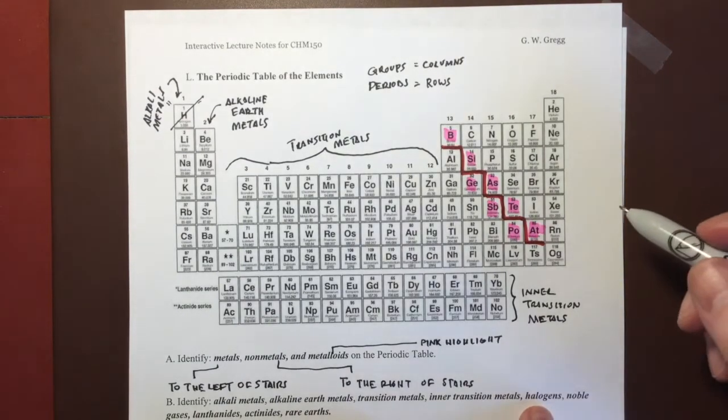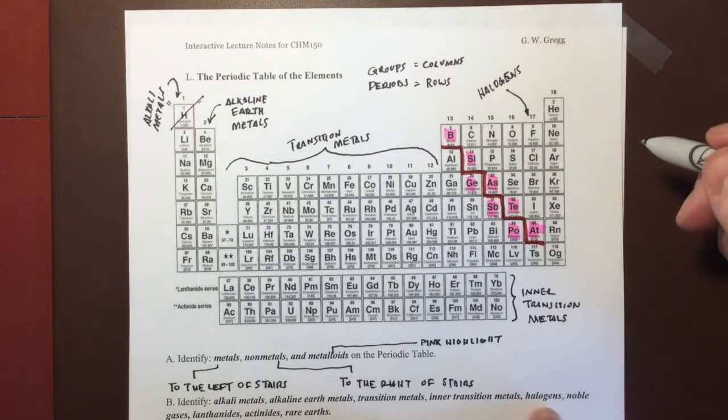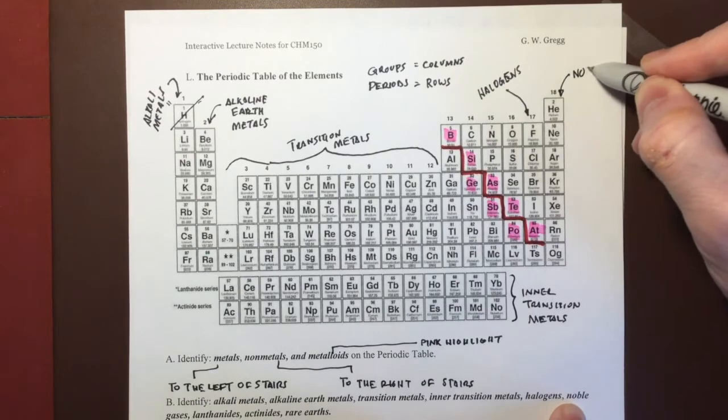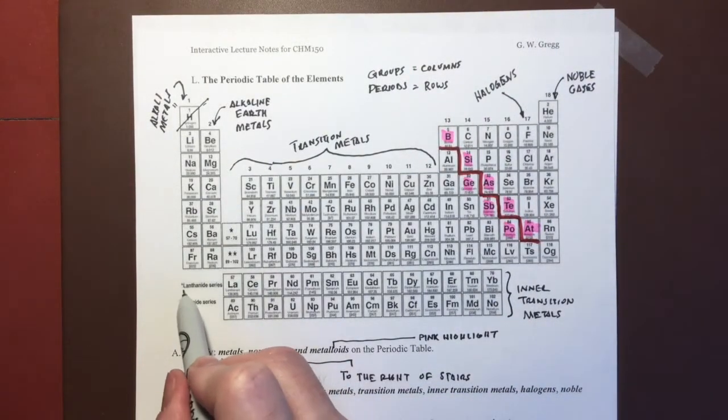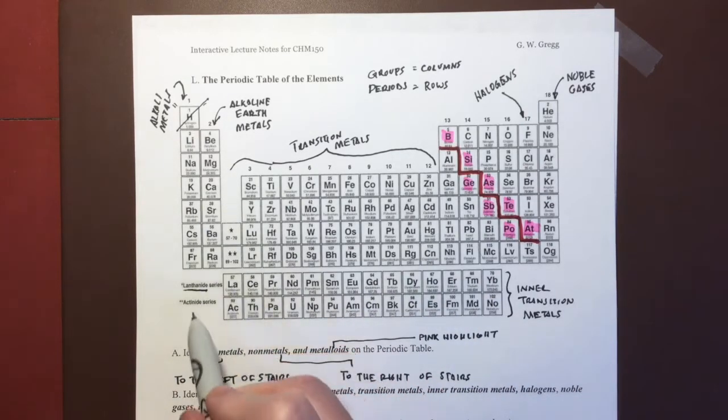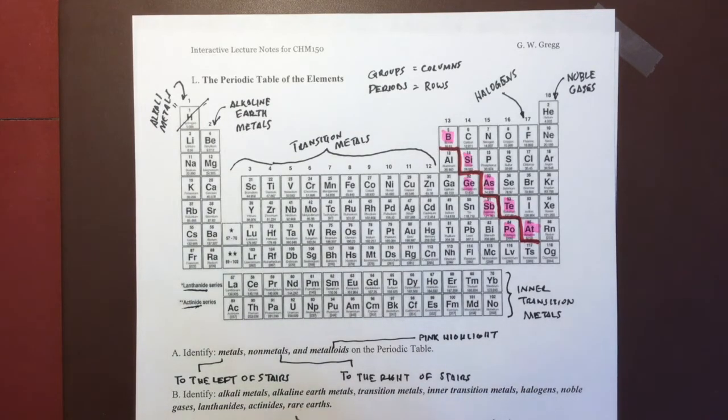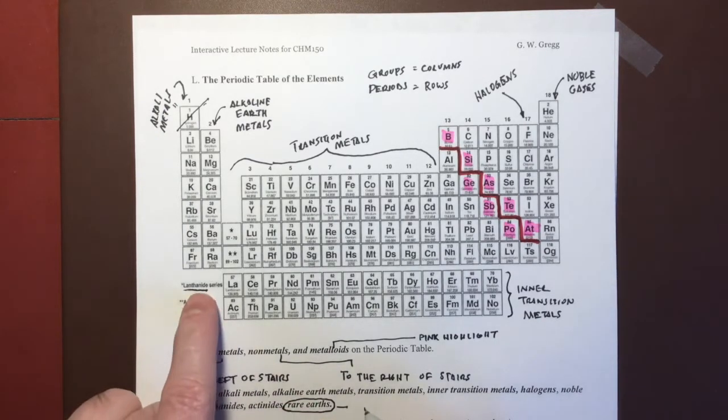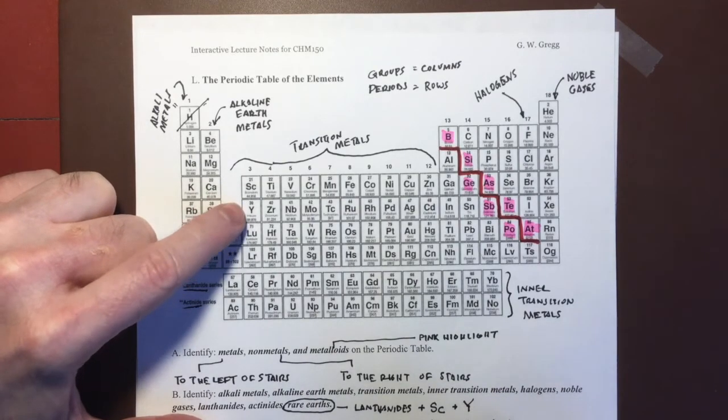Next group that we need to be familiar with are the halogens, and that's group seventeen. Group eighteen are the noble gases. Then we get the categories the lanthanides, and that's this row because it's based on lanthanum. We get the actinides, which is this row because it's based on actinium. And then there's a term rare earths. They're fairly important elements, especially important in semiconductors and electronics. Rare earths typically include the lanthanides and often scandium and yttrium are included in the rare earths as well.